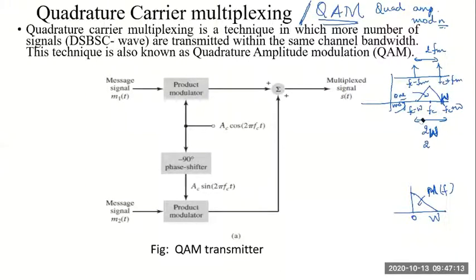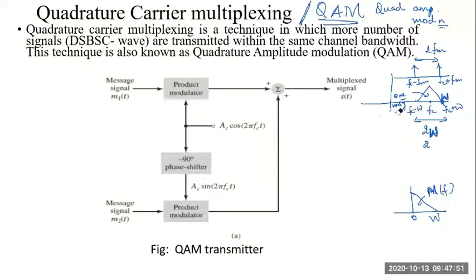What if I want to send more than one message? We have to do some form of multiplexing, and that technique is called Quadrature Carrier Multiplexing or Quadrature Amplitude Modulation, where we send two signals in the same bandwidth without interfering with each other. The name itself tells you the approach.